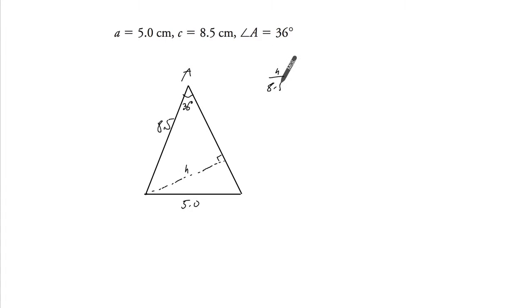So height over 8.5 equals sine of 36, so height equals 8.5 times sine of 36. I actually get a value that's extremely close to 5, so to draw this picture more correctly, it would look more like this.